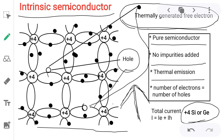If I continue increasing the temperature, the process continues. We observe that we have two holes and two electrons, meaning number of electrons equals number of holes. There is no majority and minority charge carriers. This total current depends on both electron current and hole current. If there is a majority charge carrier, then total current depends upon that majority charge carrier only.